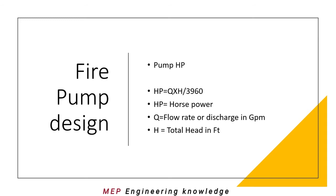The formula for horsepower is: HP = Q × H / 3960, where HP is horsepower, Q is the flow rate or discharge in GPM, and H is the total head in feet. So whichever values we have in meters, the total head needs to be converted into feet to arrive at the HP.